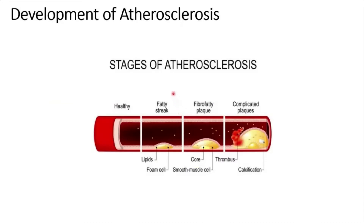Atherosclerosis begins with the formation of a fatty streak. Fatty streaks appear yellow-white on the arterial wall and are visible to the naked eye. Fatty streaks develop from foam cells. It starts with accumulation of low-density lipoprotein, or LDL, on the endothelium of arteries. Then macrophages phagocytize the LDL and a foam cell is formed.